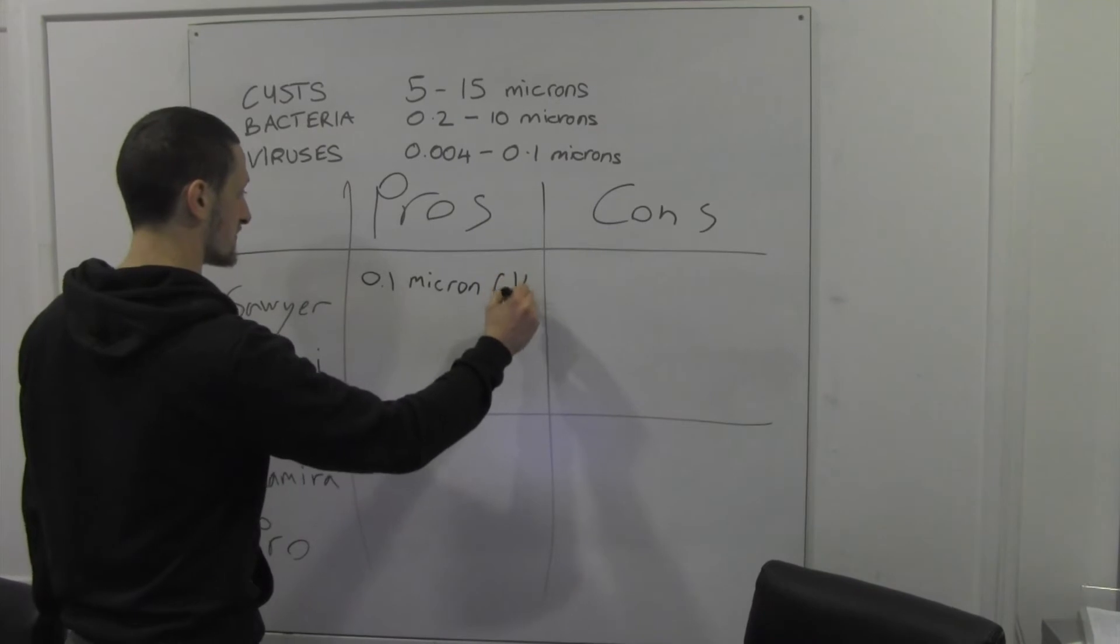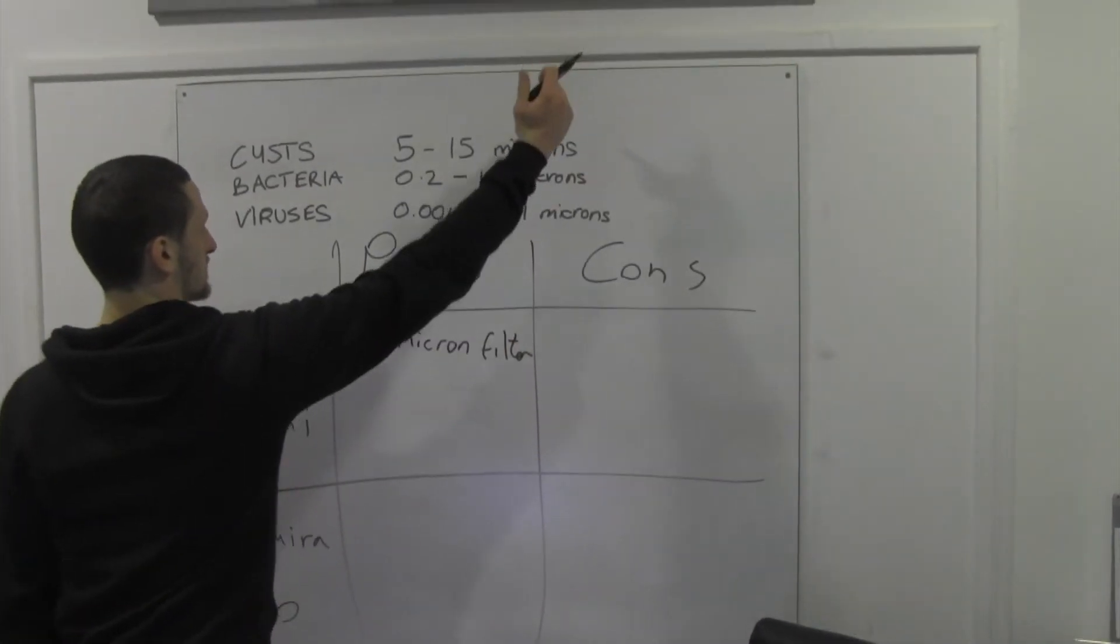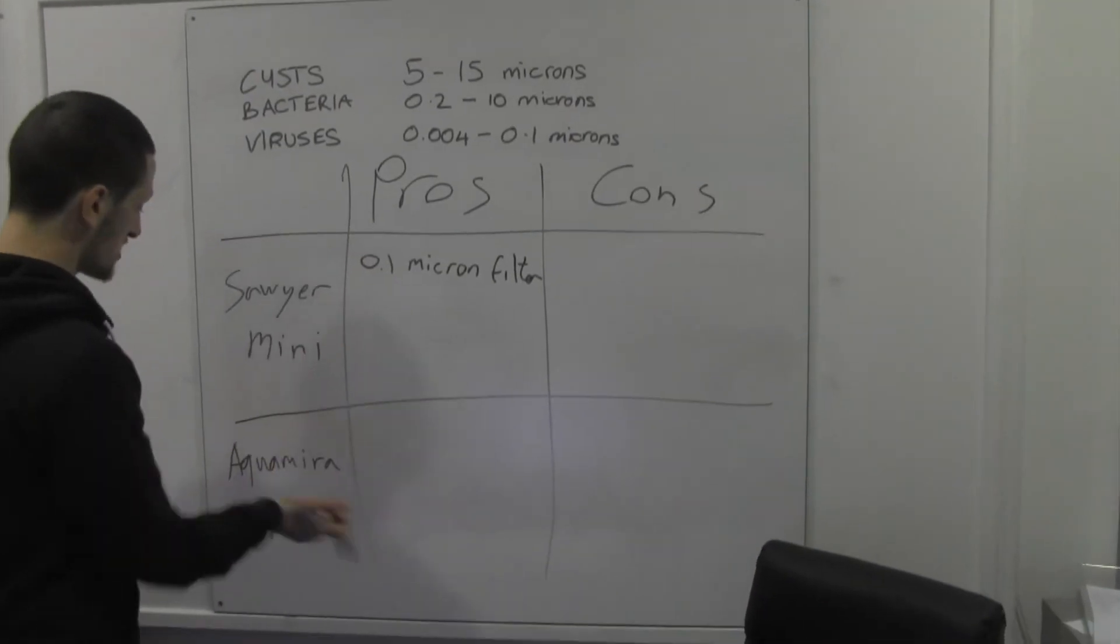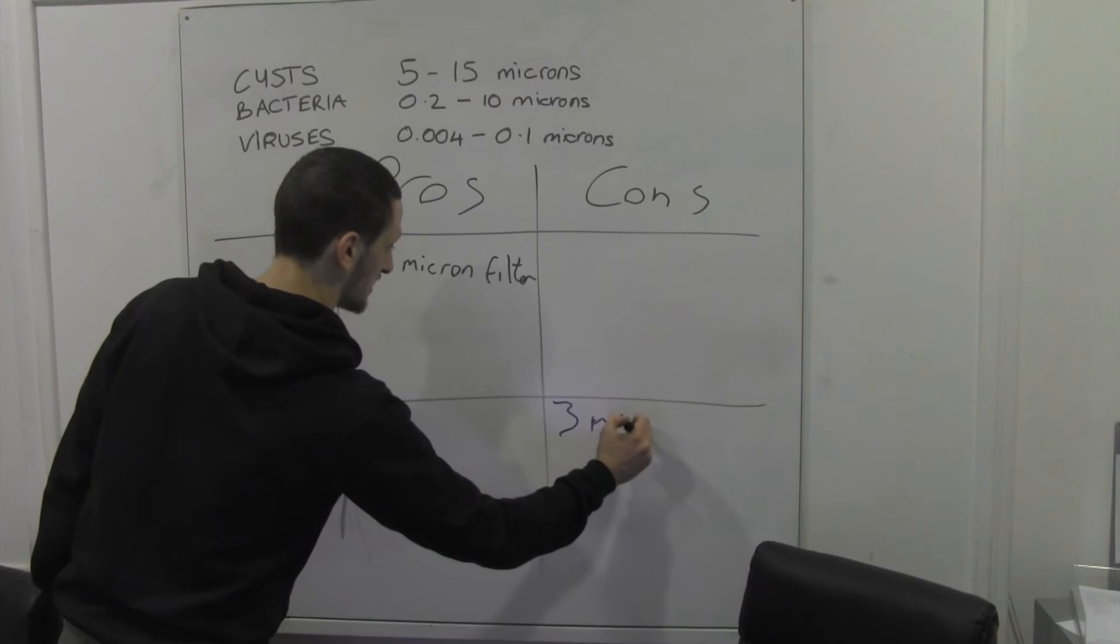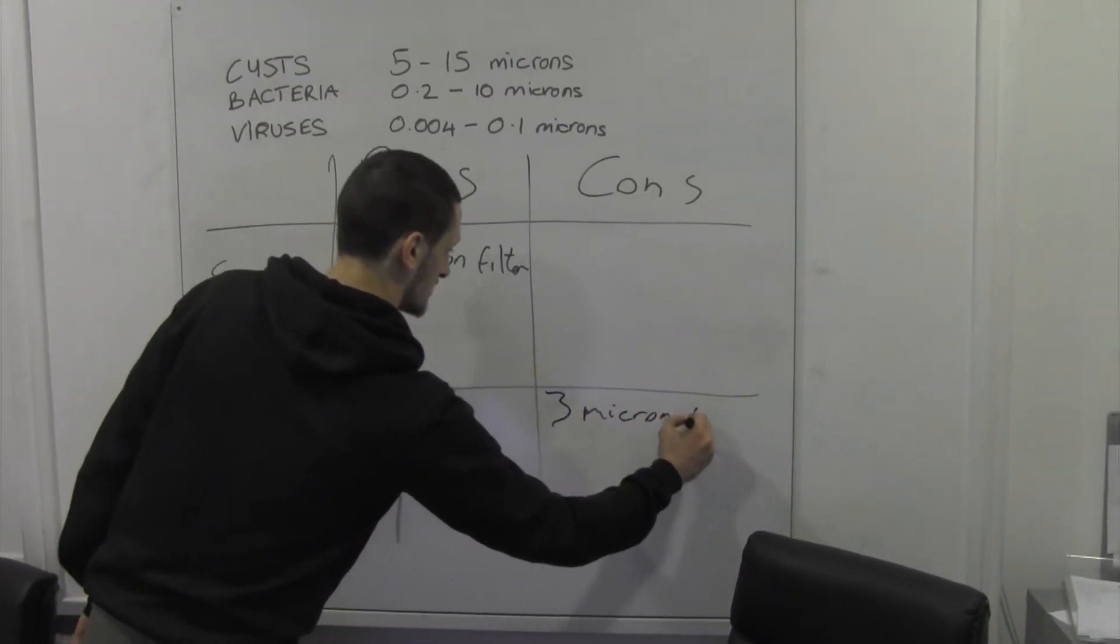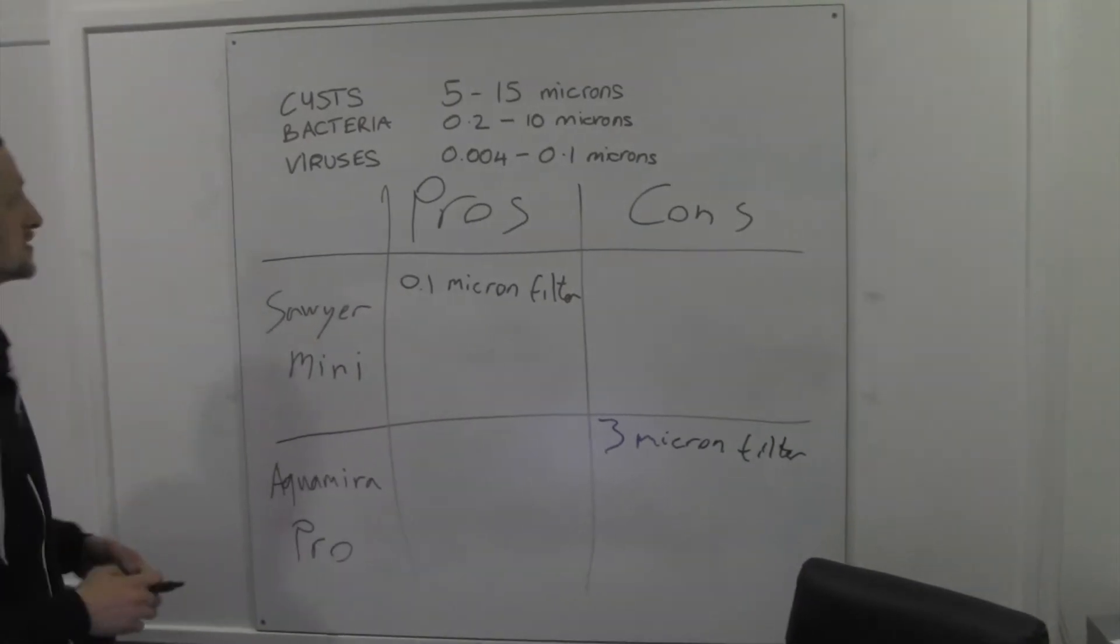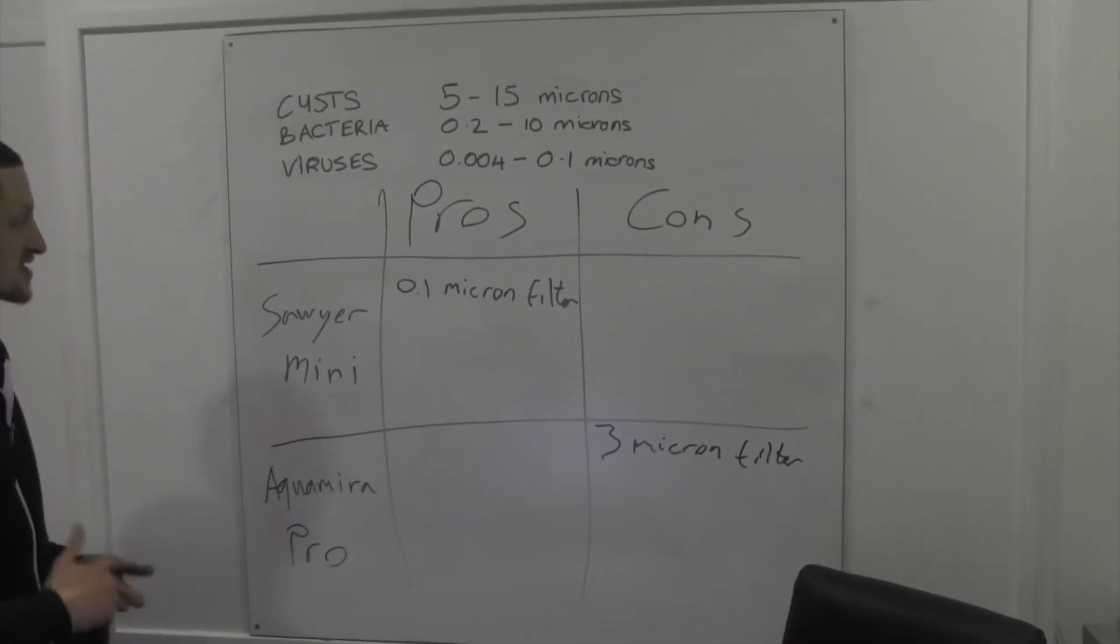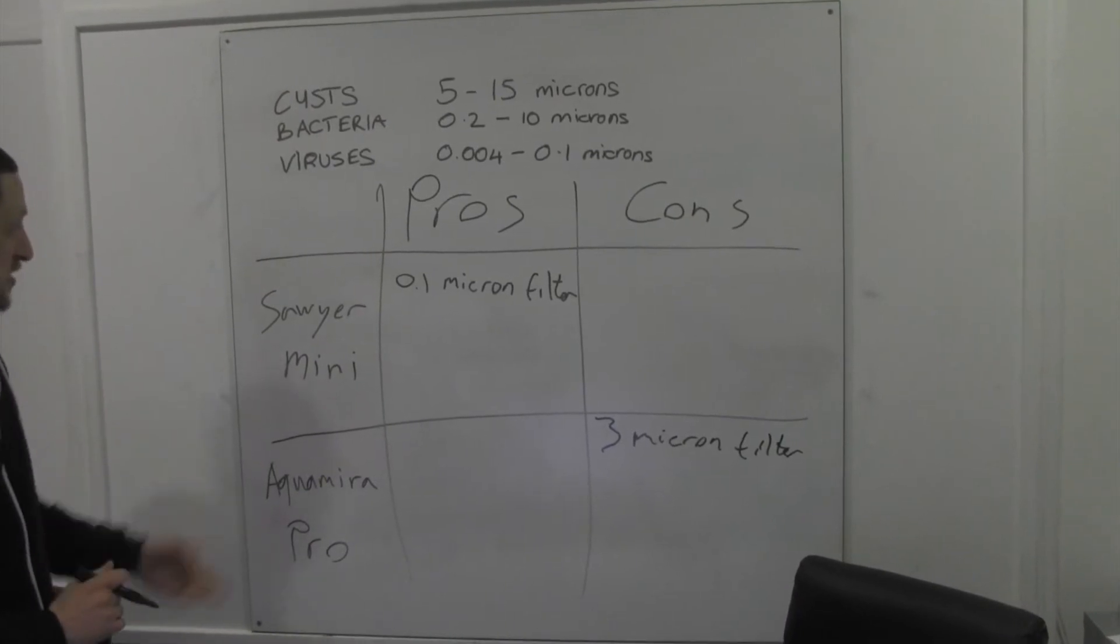Pros of the Sawyer Mini is your 0.1 micron filter. As I said earlier, this is just going to take care of basically here upwards. Brings us to the cons of the Aquamira, 3 micron filter. That's going to not take care of all of your bacteria, so you're going to kind of need to use other systems alongside it.